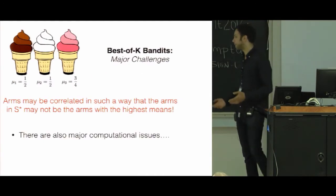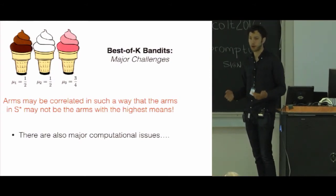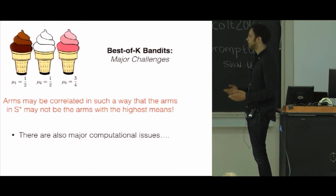There are also some substantial computational difficulties. It turns out this problem is actually an online submodular optimization problem. There are computational lower bounds and wonderful work by Golovin, Streeter, and Krause which deal with that. But in this talk, I'm really more interested in the statistical implications of this problem.